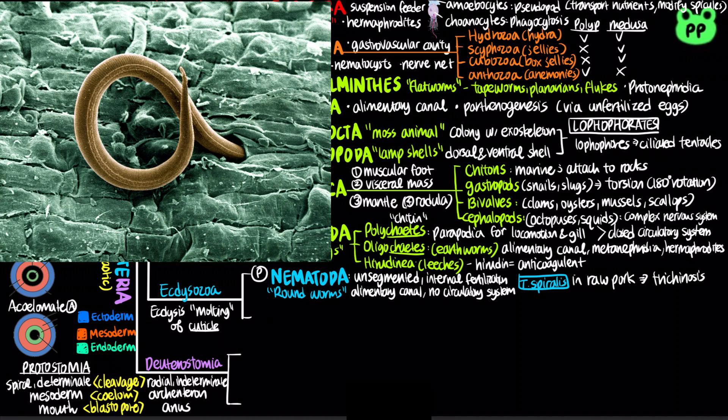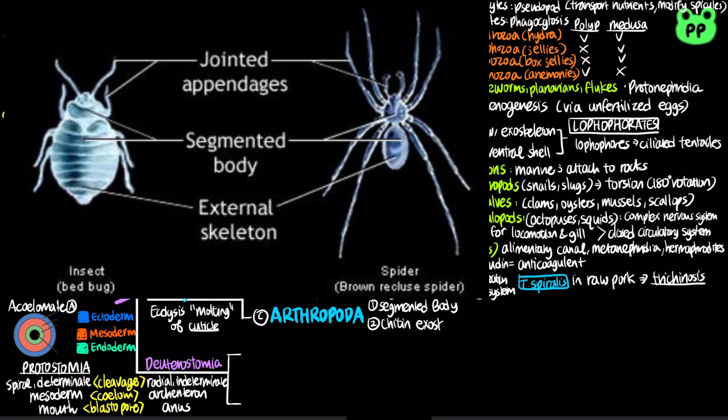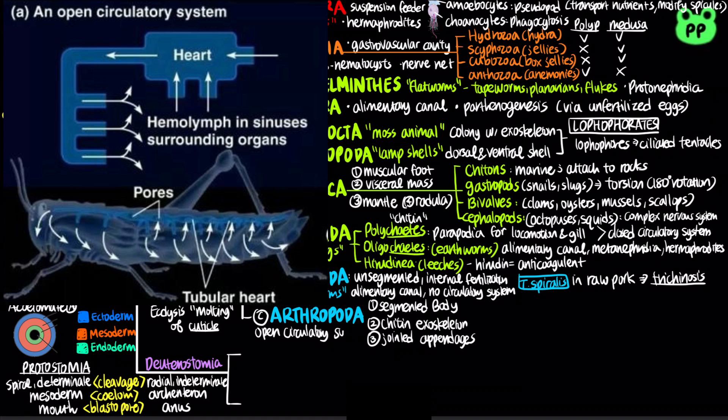Arthropods are coelomates characterized by a segmented body, a hard exoskeleton made of chitin, and jointed appendages. They have an open circulatory system in which fluid called hemolymph is circulated into spaces surrounding the tissues and organs.